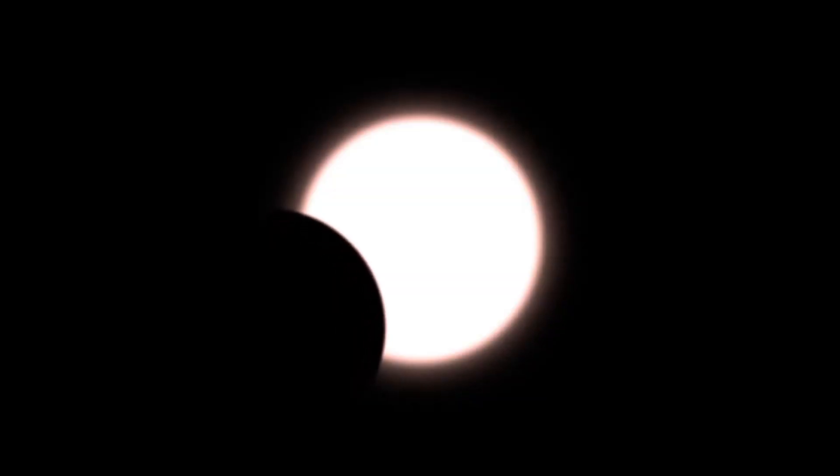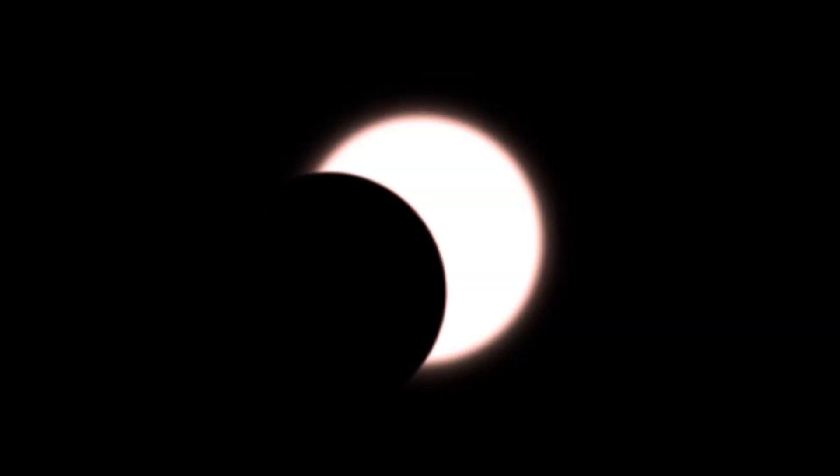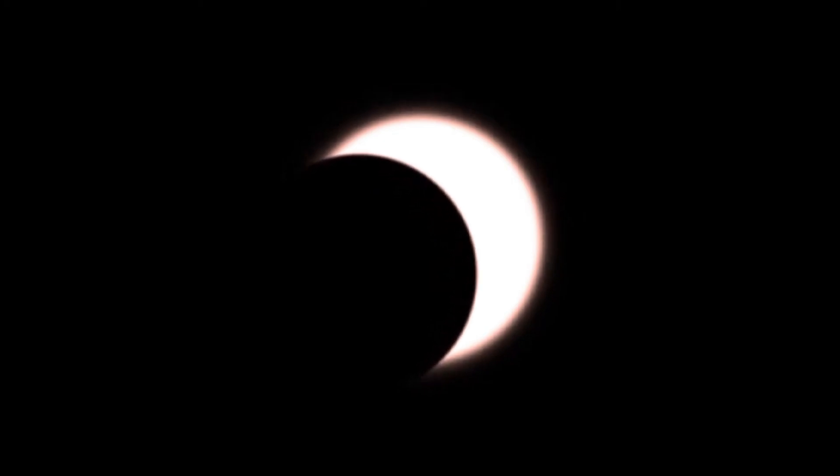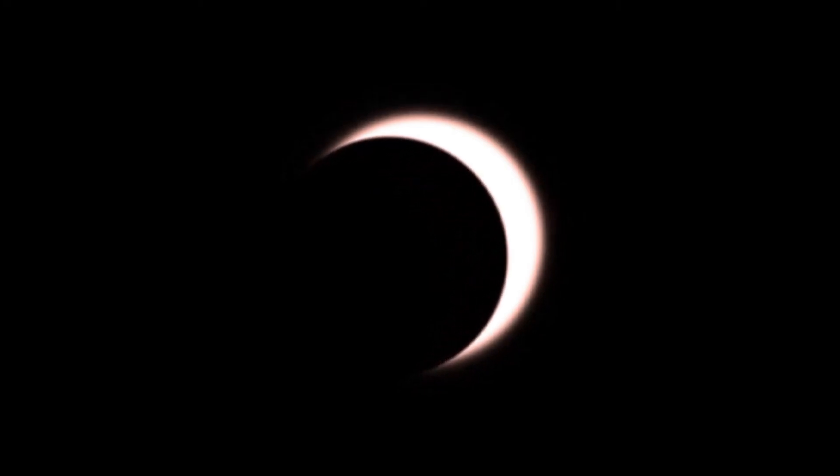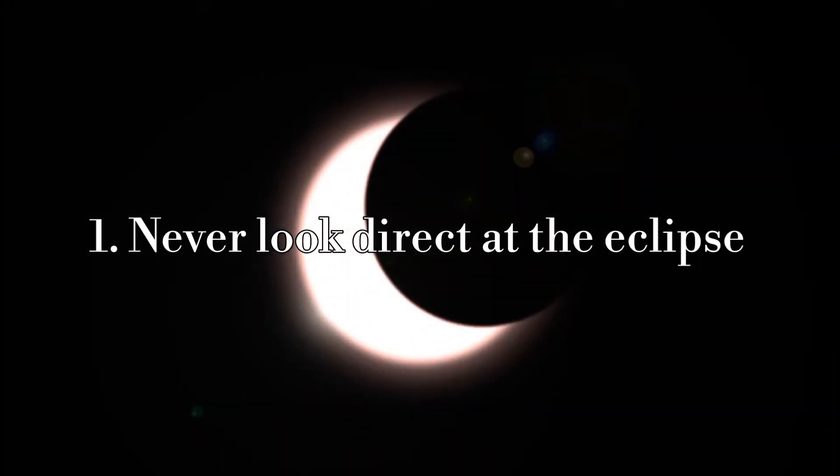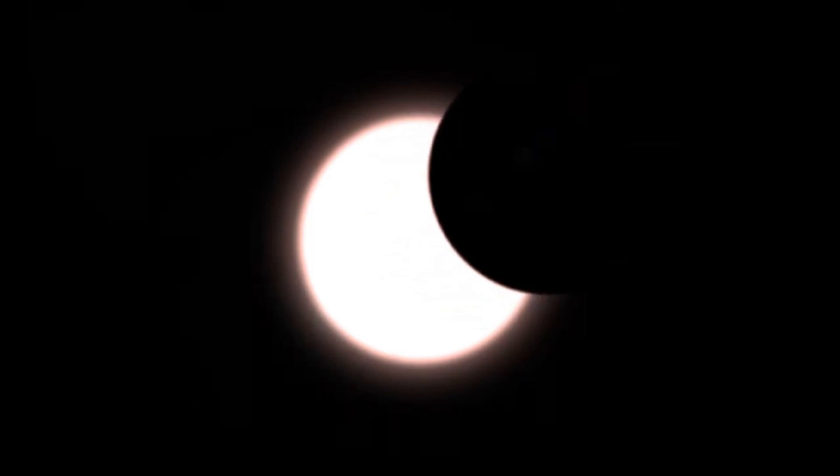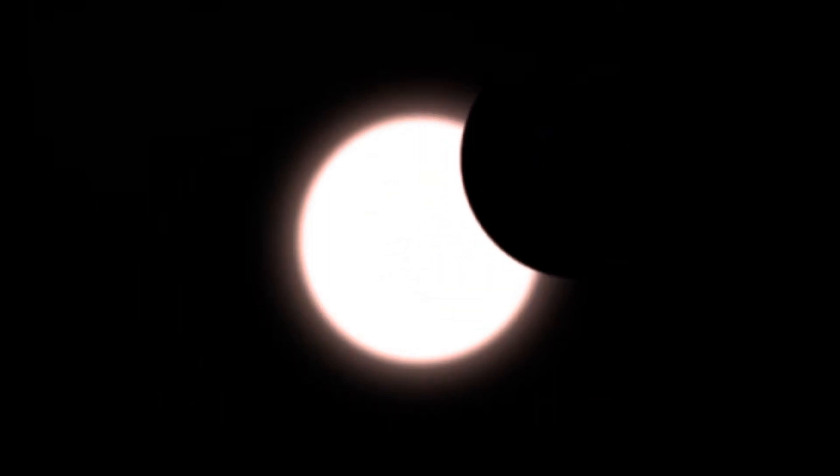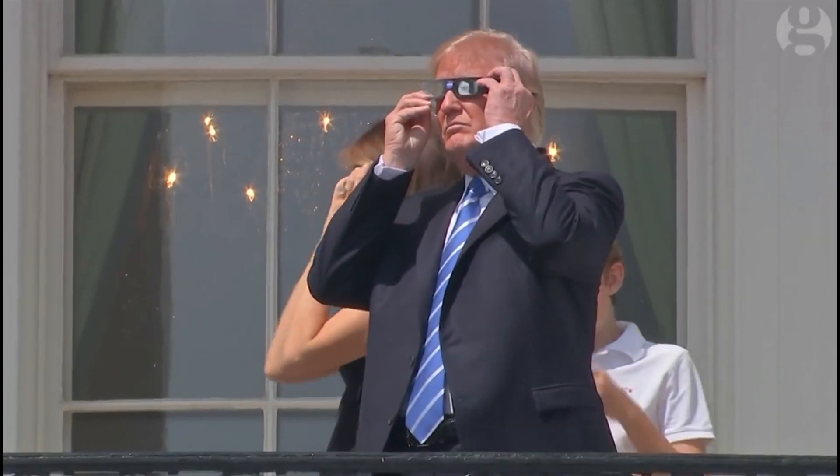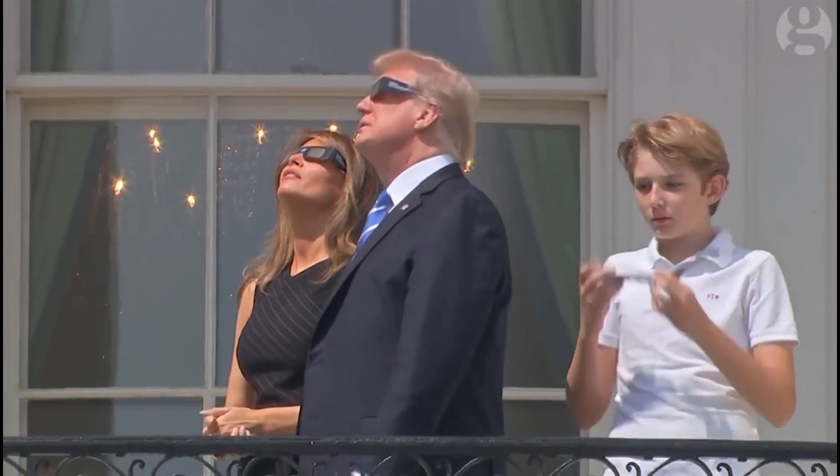As you gear up for the solar eclipse, it's crucial to prioritize safety to protect your eyes and ensure a memorable viewing experience. Here are some essential safety measures to keep in mind during the eclipse. First and foremost, never look directly at the sun without proper eye protection. The intense solar radiation emitted during an eclipse can cause serious eye damage, including permanent blindness. It's imperative to warn viewers against the temptation to glance at the sun with the naked eye, even during the partial phases of the eclipse.